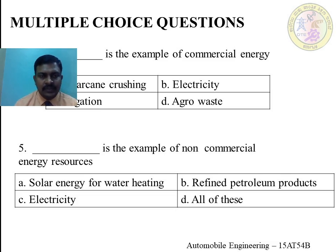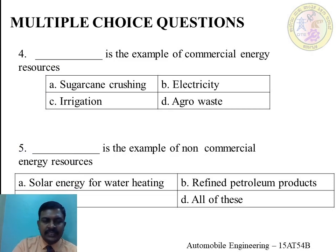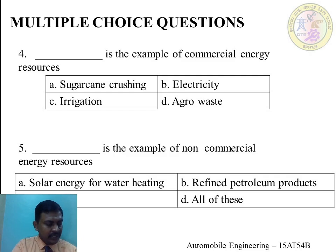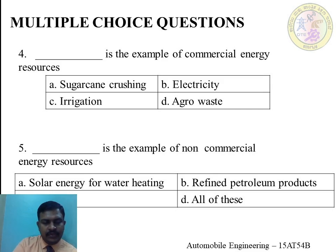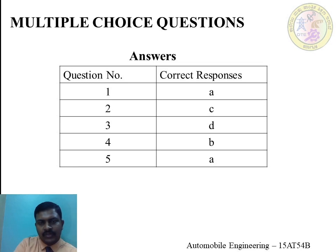That concludes today's class. To recap: we discussed two types of energy sources — commercial and non-commercial — and the five classifications: based on usability of energy, traditional use, long-term availability, commercial application, and origin. We also solved a few MCQs. The correct answers are: Q1 option A, Q2 option C, Q3 option D, Q4 option B, and Q5 option A.